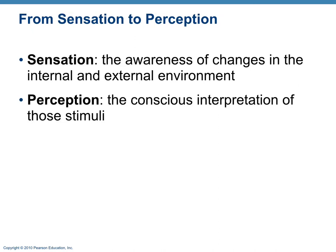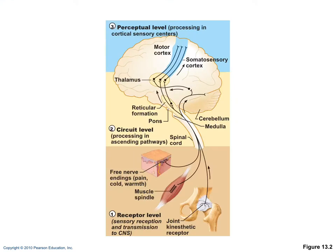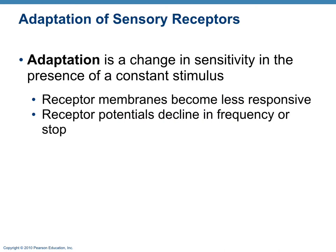An important distinction is sensation versus perception. Sensation is the awareness of changes in the internal and external environment, while perception is the actual conscious interpretation of those stimuli. Sensory integration occurs at three levels: the receptor level with sensory receptors, the circuit level with ascending pathways, and the perceptual level where neural circuits process information in the cerebral cortex. Adaptation is the change in sensitivity in the presence of a constant stimulus — receptor membranes become less responsive and receptor potentials decline in frequency or stop altogether.